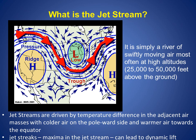Based on the fact that it is driven by adjacent temperature differences, the jet stream is typically farther north during the summer months and farther south during the winter months. Jet streaks are the areas of maximum winds in the jet stream and they lead to dynamical lift.